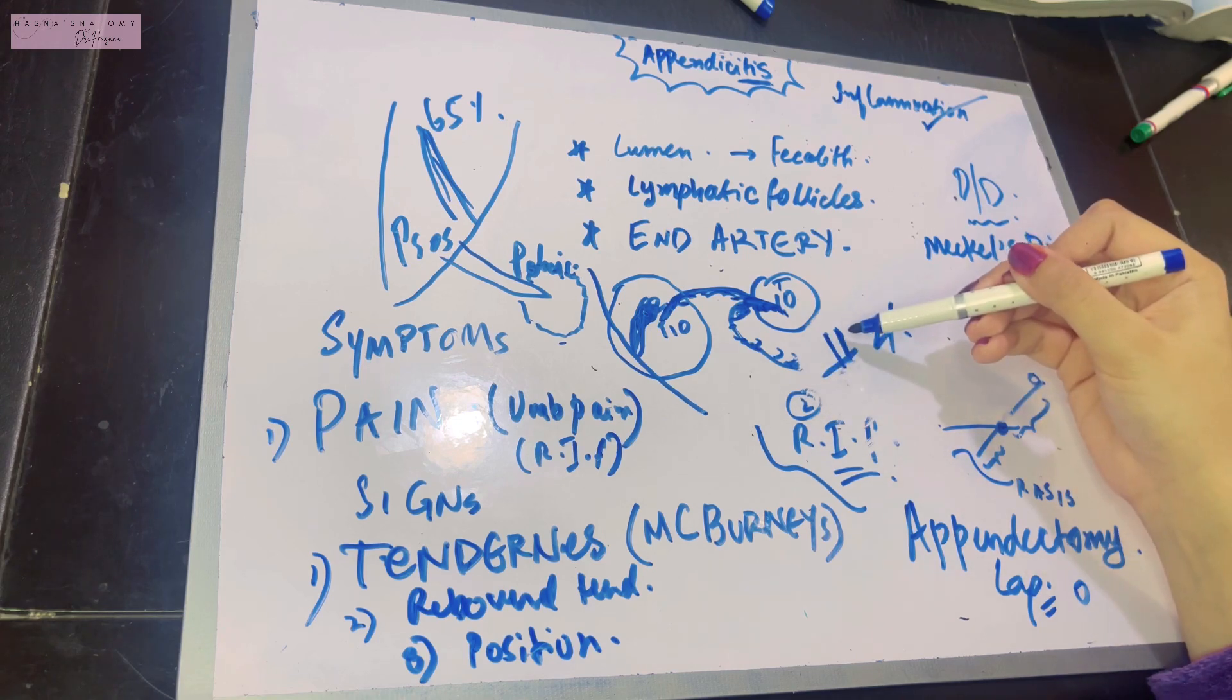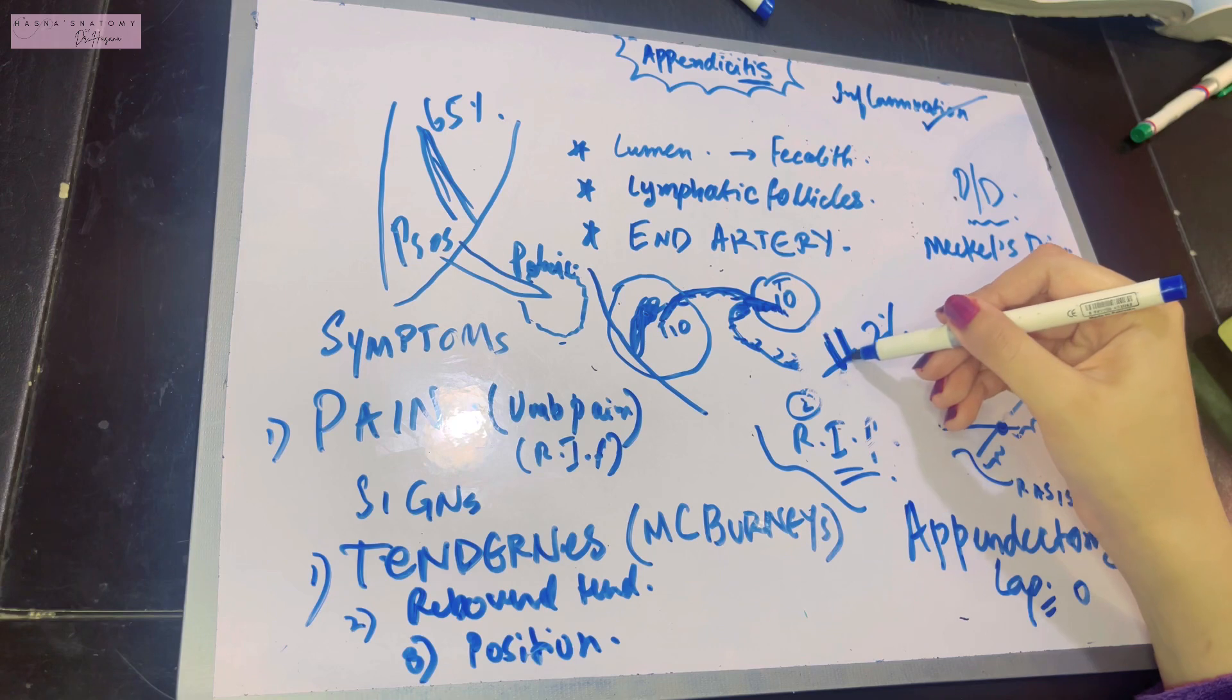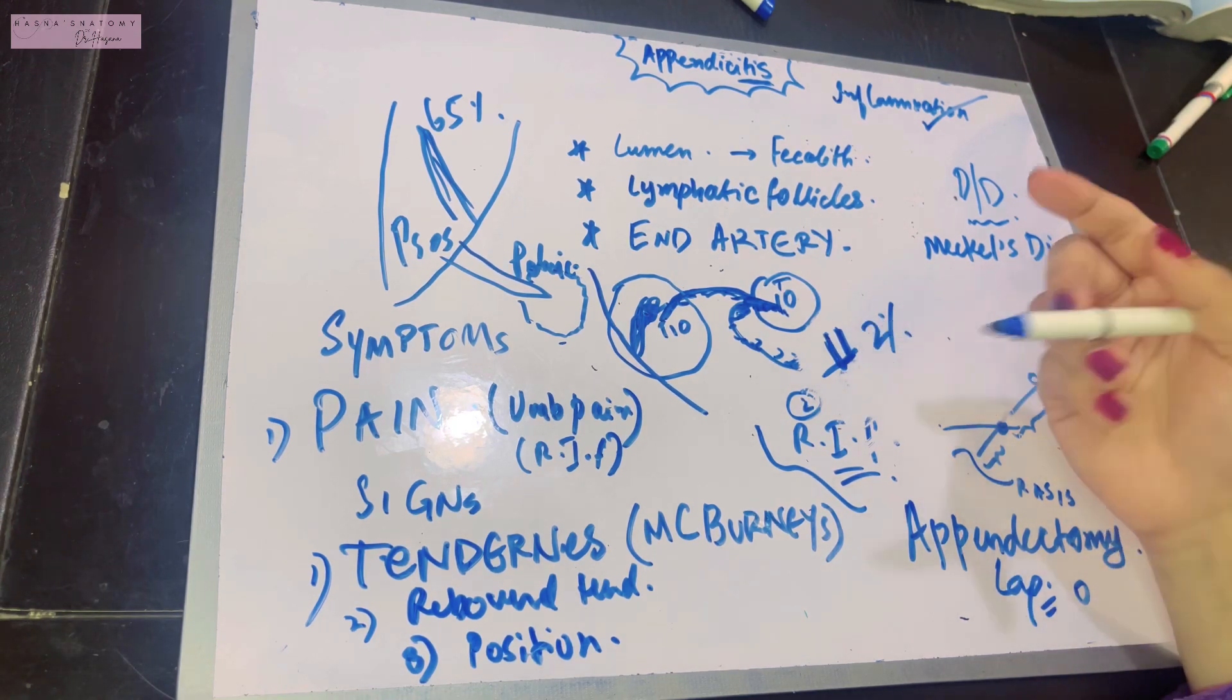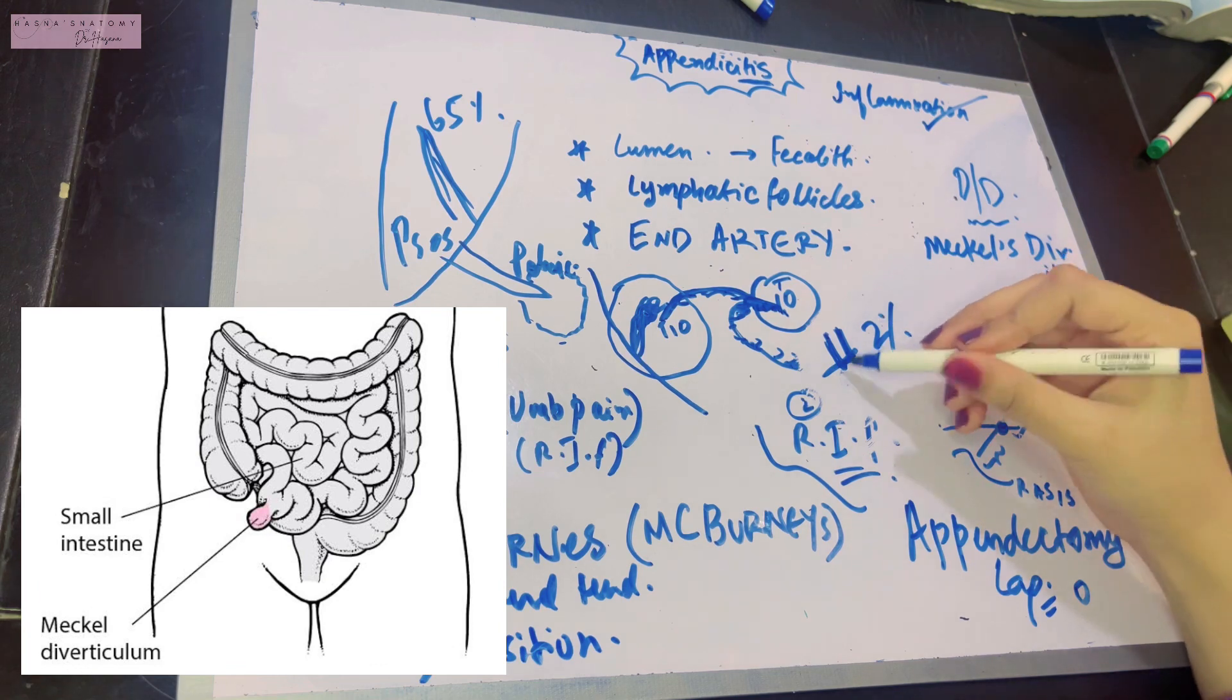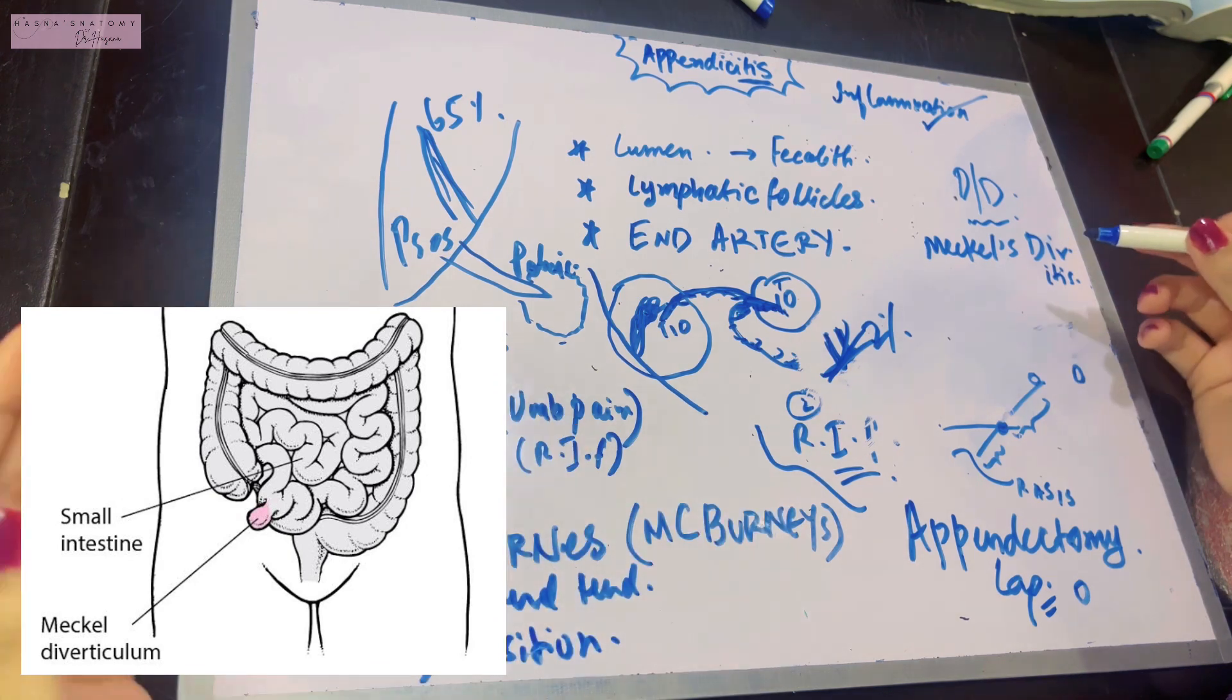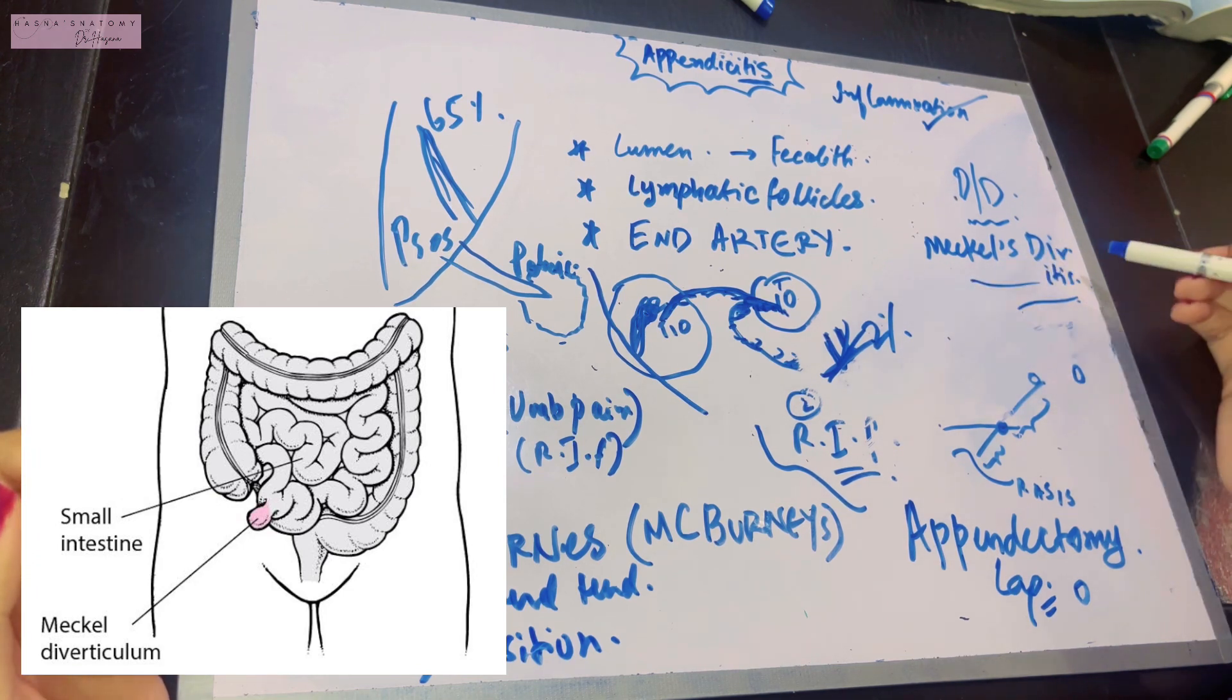In two percent of individuals, this Meckel's diverticulum remains. It can undergo infection leading to inflammation known as Meckel's diverticulitis. It can even undergo rupture. The symptoms of this disease can mimic appendicitis, so you might suspect appendicitis, but when you go inside, you realize the appendix is completely normal and this was the major cause of it.